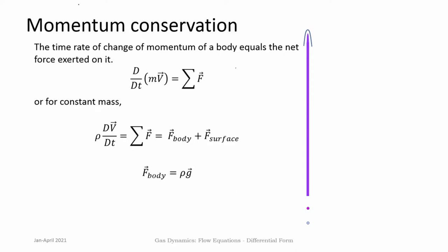Now let us look at momentum conservation. Momentum is mass multiplied by velocity — velocity is a vector, momentum is a vector, so we are dealing with vector equations. In Cartesian coordinates this involves three components u i + v j + w k, so three different velocity components, and forces also in three different directions. Forces can in general be body forces or surface forces; the body force is usually due to gravity rho g. The left-hand side is d/dt of momentum, and applying conservation of mass, this comes out to be rho dv/dt.